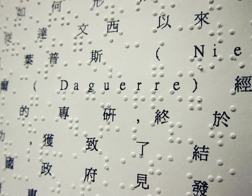Taiwanese braille is the braille script used in Taiwan for Taiwanese Mandarin. Although based marginally on international braille, the majority of consonants have been reassigned. Also, like Chinese braille, Taiwanese braille is a semi-syllabary.